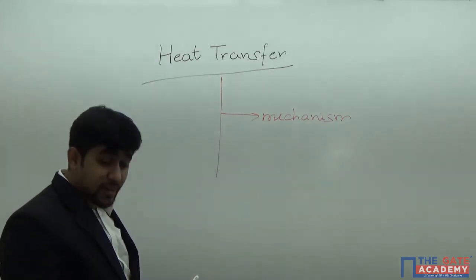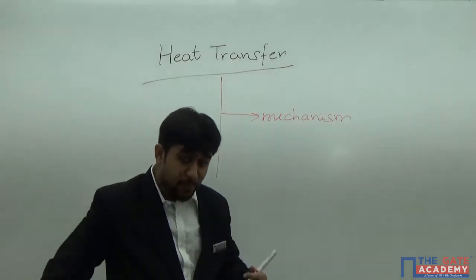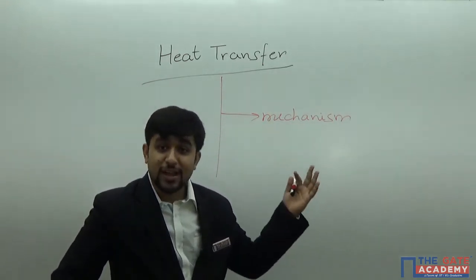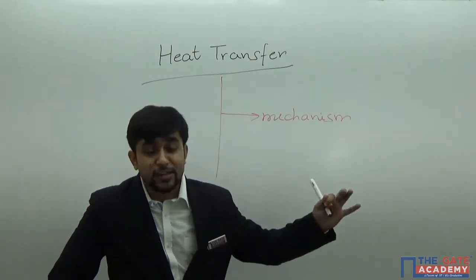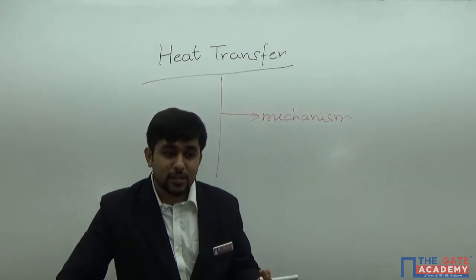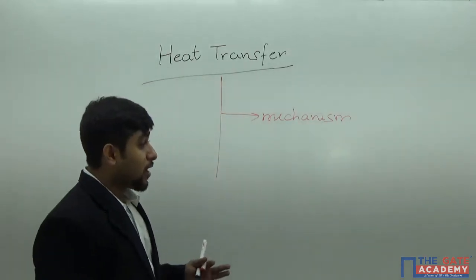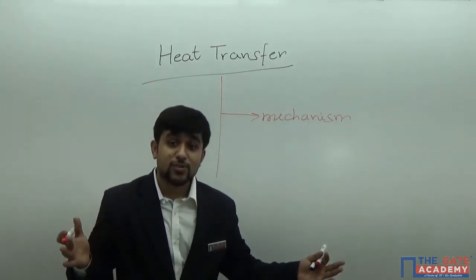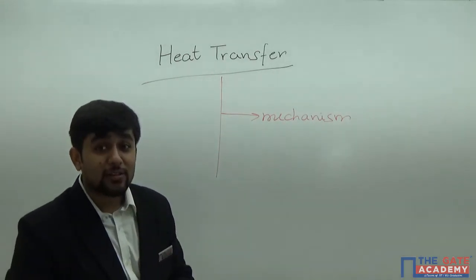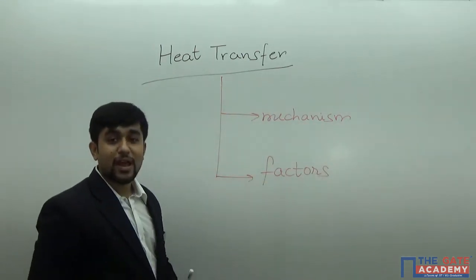Whenever a process occurs, there are factors which influence it. For example, if the wall is made of metal, wood, or concrete, each material gives a different rate of heat transfer. With metal walls, it feels much hotter inside; with wood or concrete, it is comparatively cooler. Also, if the thickness of the wall increases, the rate of heat transfer decreases, and if thickness decreases, the rate increases. So material and design are factors influencing heat transfer.